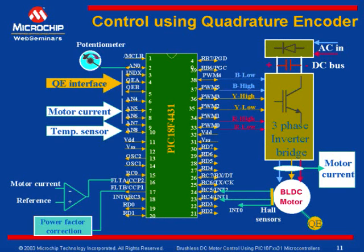This quadrature encoder interface gives high-resolution speed measurement, and also provides position and direction feedback. In this case, Hall sensors are used for commutation, and these Hall sensors are connected to interrupt pins INT0, INT1, and INT2. All other hardware description holds good as before. We have seen how six PWMs can be interfaced to control the three-phase inverter bridge, and how motor current can be compared and a fault input generated to shut down the PWM in case of any overcurrent situation.